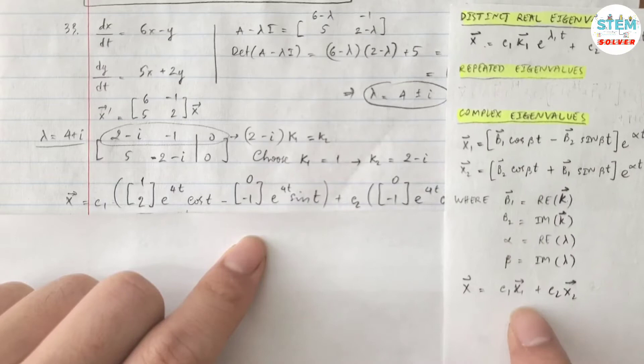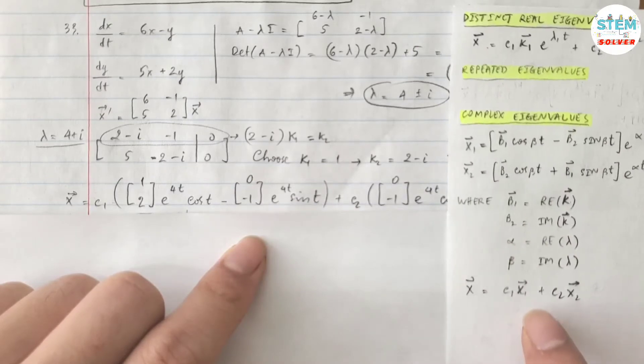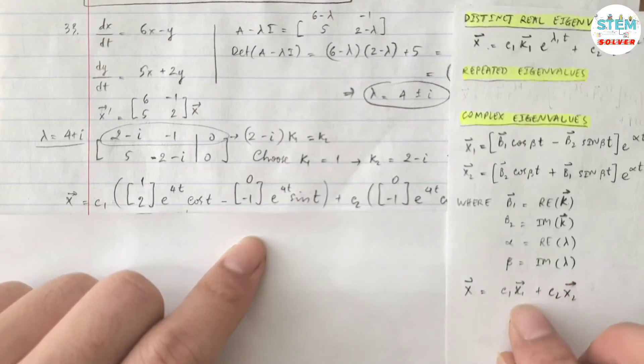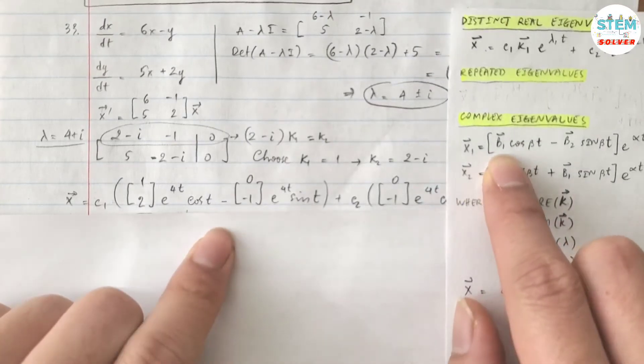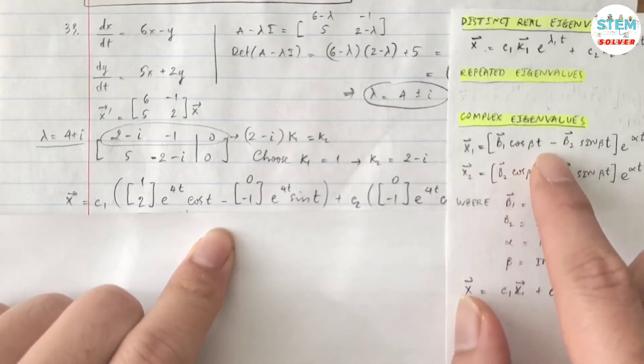Vector x(t) equals c1 times vector x1 plus c2 times vector x2. What is x1? x1 is vector b1 times cos(βt)